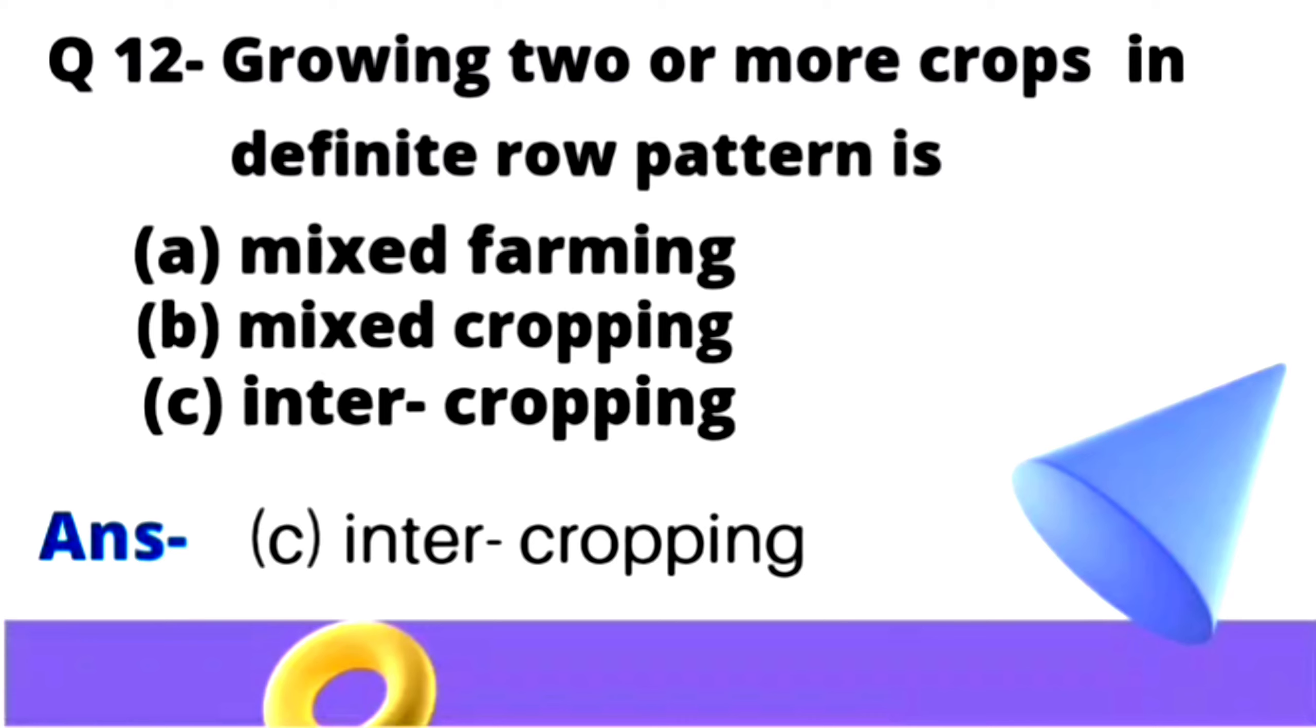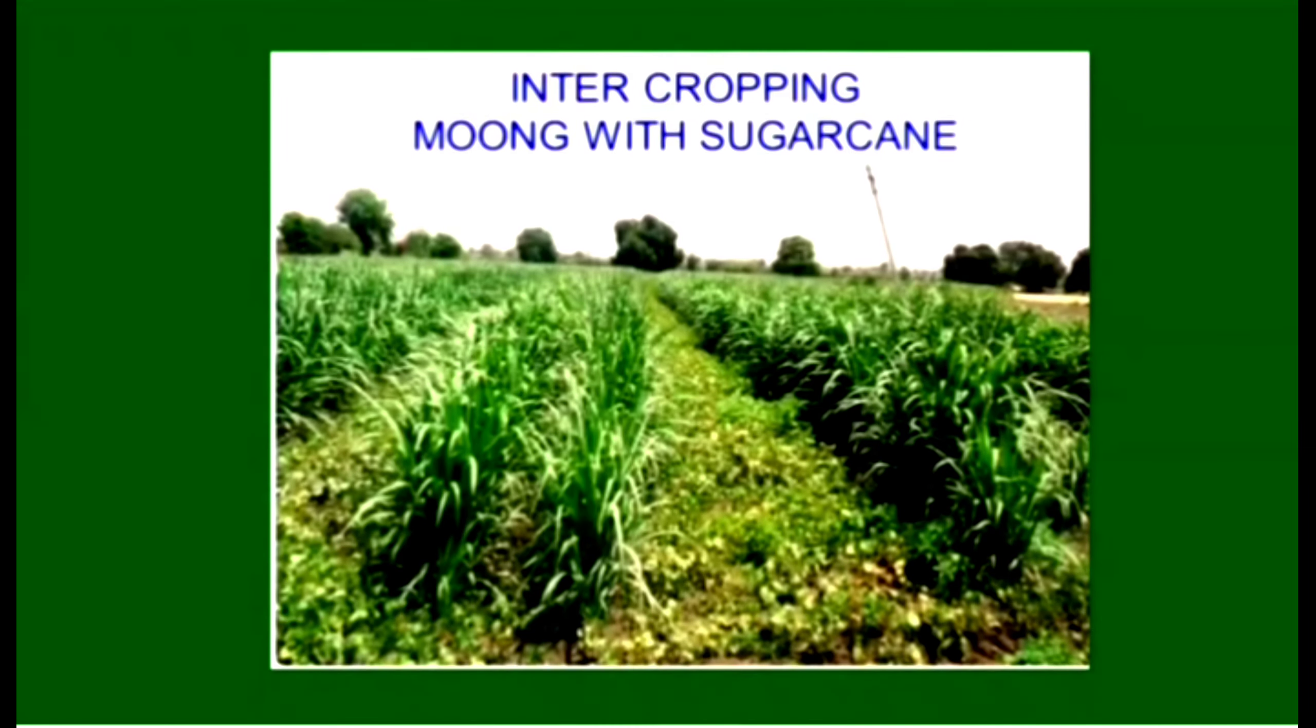The answer is option C, that is intercropping. In intercropping, we grow crops in definite row pattern. You can see how mung and sugarcane are intercropped with difference in the row pattern. So the answer is intercropping.